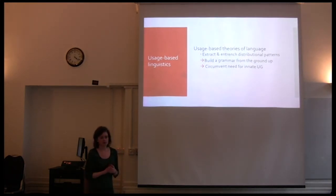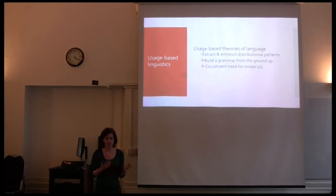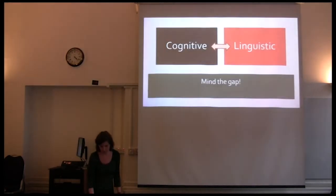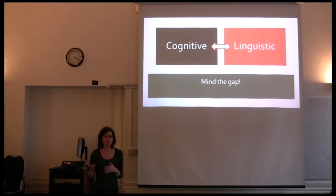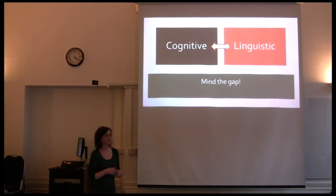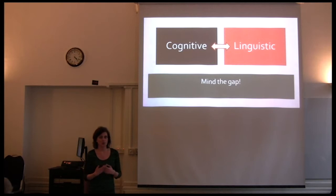Generally, we work within a usage-based approach to language. What attracted me personally is that these approaches are built on the assumption that our ability to extract and entrench distributional patterns we see in language can be used to build grammar from the ground up — we do not need to posit any innate structures. There is a tension between the cognitive and the linguistic: very powerful classification techniques can describe language, but they're not necessarily cognitively realistic. Do you choose descriptive accuracy and economy, or what might be cognitively plausible? We want to explore whether we can bridge that gap using insights from learning theory, building those into our descriptions from the very start.